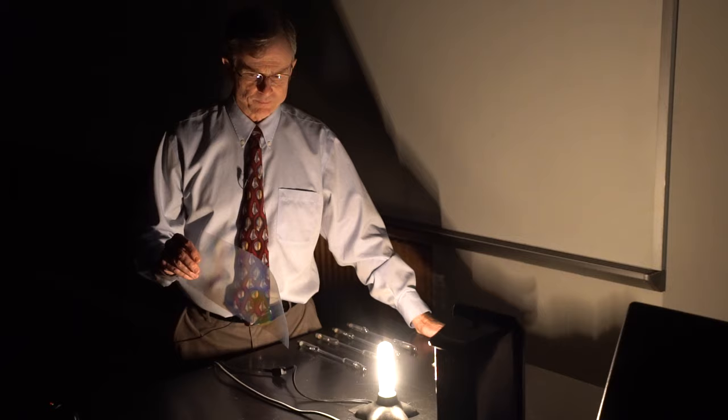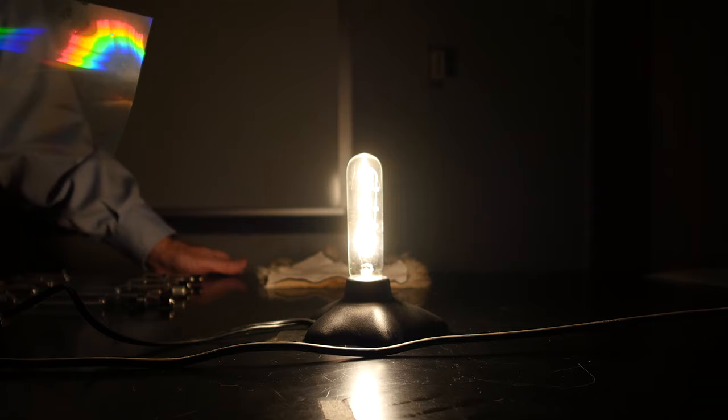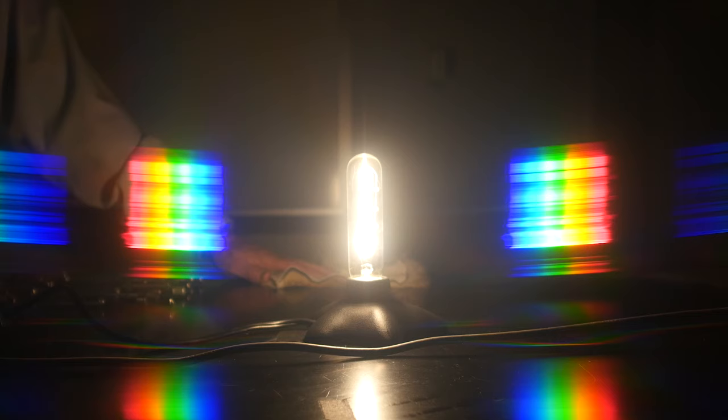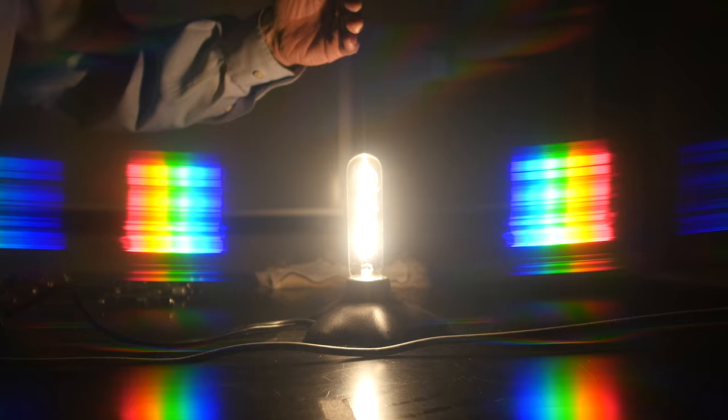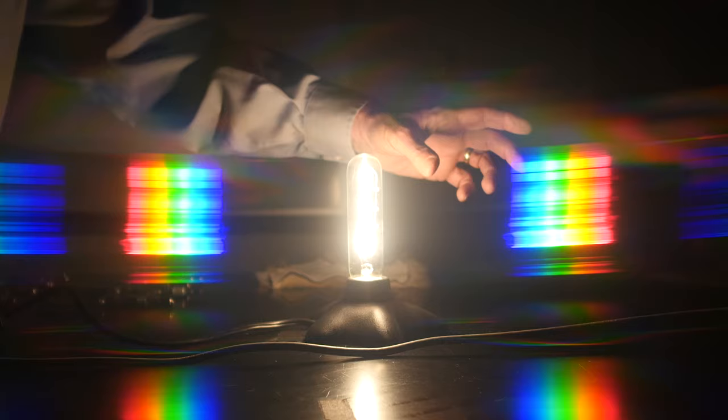So what we're going to do is place this diffraction grating in front of a camera and show you the view of this continuous source with the diffraction grating in place. And what you'll see in the image is the image of the incandescent bulb itself. And then to the right and to the left, you'll see a rainbow spectrum that shows what wavelengths are present in this.